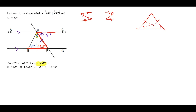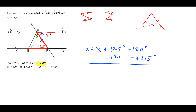Now we have a triangle with all three angles labeled, so we can add them up: X plus X plus 42.5 degrees equals 180 degrees. Subtracting 42.5 from both sides gives 2X equals 137.5 degrees. Doing the long subtraction: 180 minus 42.5 — borrowing as needed — gives us 137.5 degrees.